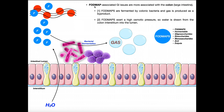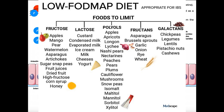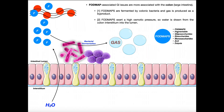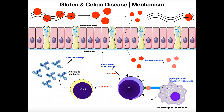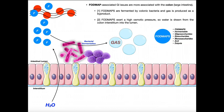FODMAP intolerance does not involve the immune system — it actually involves intestinal bacteria. A FODMAP is not gluten, but it tends to come in foods that have gluten. It's also found in some foods that do not have gluten — some vegetables have a significant amount of FODMAPs. FODMAP is an acronym for fermentable oligosaccharides, disaccharides, monosaccharides, and polyols. This is a very large class of compounds, but they are all carbohydrates fermentable by intestinal bacteria. Whereas celiac disease occurs mostly in the small intestine, FODMAP issues occur more in the large intestine and colon.